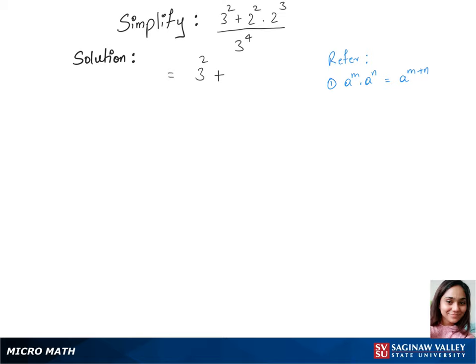we see that 2 squared times 2 cubed is just like this rule here. So we can write 2 to the power of 2 plus 3, over 3 to the power 4.